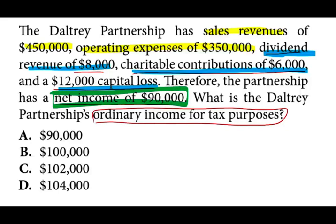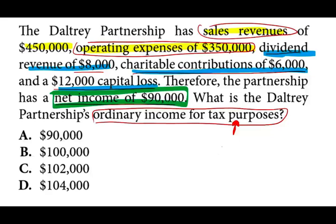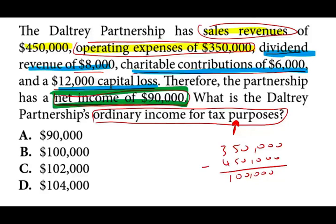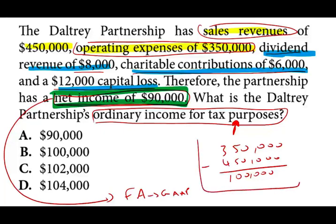To properly answer, focus on what goes on the Form 1065: only the operating expenses are deducted, and only the sales revenue is counted — those are the ones highlighted in yellow. So we take $450,000 minus $350,000, which gives us $100,000. You might ask about the net income of $90,000 — that figure is for financial accounting (GAAP) purposes, and it's thrown in there to confuse you. There's a $10,000 difference somewhere, but we're not asked to reconcile it. Therefore, the ordinary income for tax purposes is $100,000.